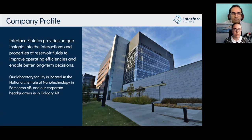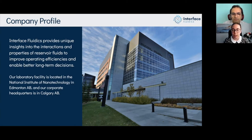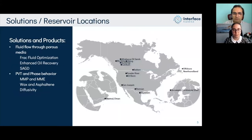Interface Fluidics is a company that provides unique insights into the interactions and properties of reservoir fluids to improve operating efficiencies and enable better long-term decisions for our clients. Our laboratory facility is located in Edmonton at the National Institute of Nanotechnology, and our corporate headquarters are in Calgary. Interface has experience working all over the world, from Norway to Oman, but today we're focusing on work done in the US, from the Permian to the Eagle Ford.